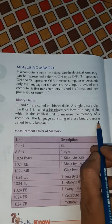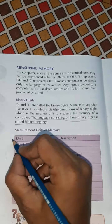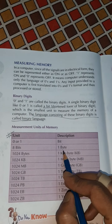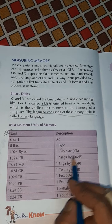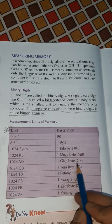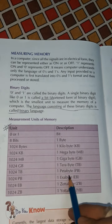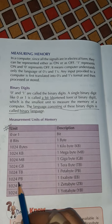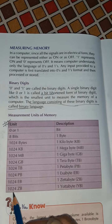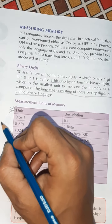The language consisting of binary digits is called binary language — this is a very important part you need to memorize. The memory units are: 1 bit = 0 or 1; 8 bits = 1 Byte; 1024 Bytes = 1 Kilobyte (KB); 1024 KB = 1 Megabyte (MB); 1024 MB = 1 Gigabyte (GB); 1024 GB = 1 Terabyte (TB); 1024 TB = 1 Petabyte (PB); 1024 PB = 1 Exabyte (EB); 1024 EB = 1 Zettabyte (ZB); 1024 ZB = 1 Yottabyte (YB).